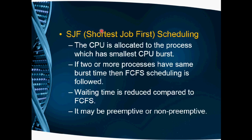Now we will go to the second scheduling algorithm: Shortest Job First, or SJF. The process which has the smallest CPU burst time will be executed first. If more than one process has the same burst time, we follow FCFS order. An important point: this algorithm can be either preemptive or non-preemptive. FCFS is only non-preemptive, but SJF can be either. In the next video, we will see problems for the preemptive case.